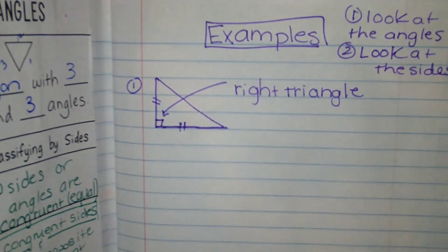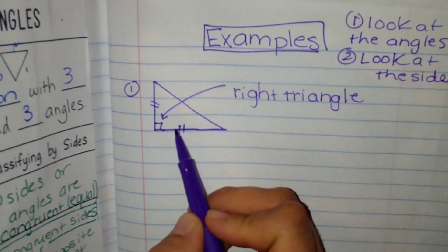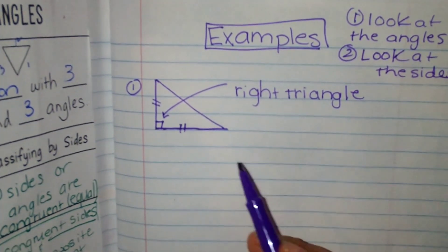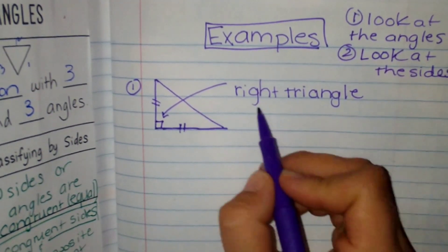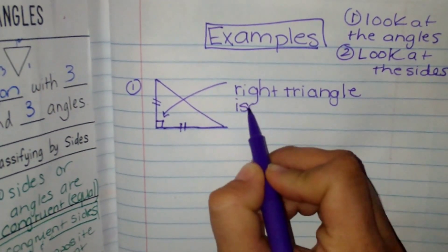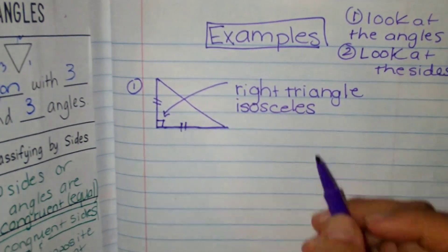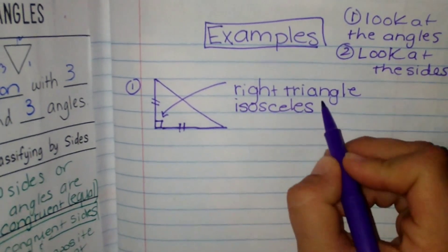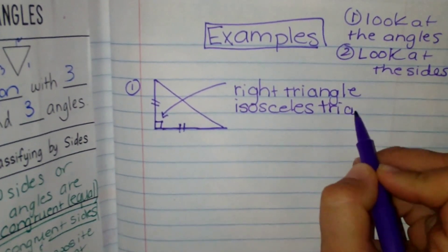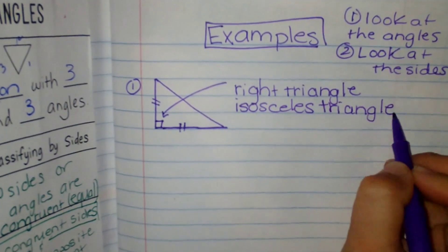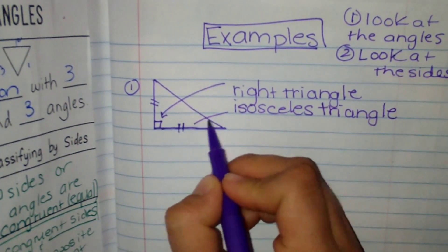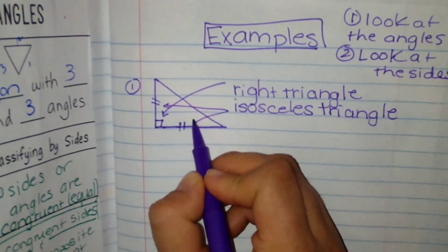Then I'm going to look at the sides. So the next thing I'm going to do is look at the sides. I have two equal sides, or we call them congruent. Two congruent sides. That means that it is an isosceles triangle. So it's a right isosceles triangle.